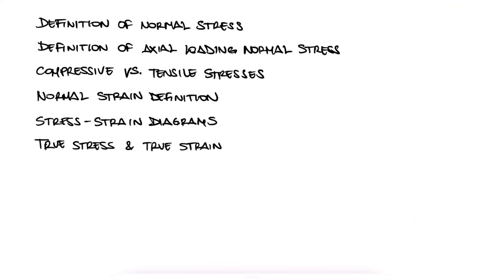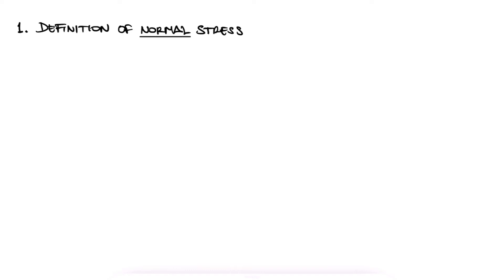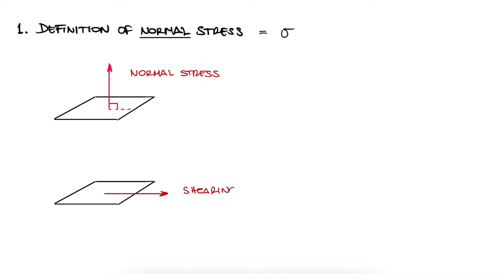Axial loading will cause stresses that we defined as normal stresses, for which we use the Greek letter sigma. The word normal refers to the direction of the stresses with respect to the surface of the cross-section area it affects. All normal stresses are therefore normal, or in more mundane words, perpendicular to the surface. These normal stresses contrast shearing stresses, which are those that are parallel to the surface of the cross-section area. But more on that later.